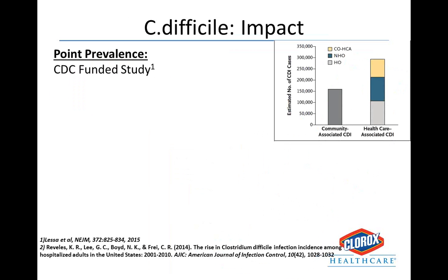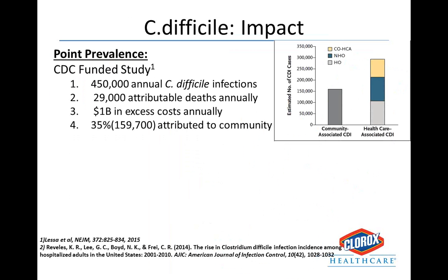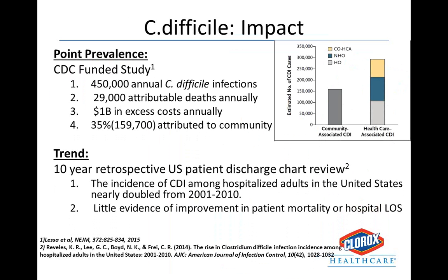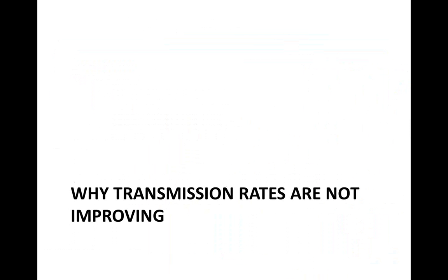In terms of where we are now, a CDC-funded study found 450,000 patients had annual cases of C. difficile infections, with 29,000 deaths attributed to C. difficile and about $1 billion in excess cost annually. About 35% of those patients were attributed to the community with no previous hospital admission. A 10-year retrospective U.S. patient discharge chart review noted that the incidence of C. difficile among hospitalized adults nearly doubled from 2001 to 2010, yet there is little evidence of improvement in patient mortality or hospital length of stay.